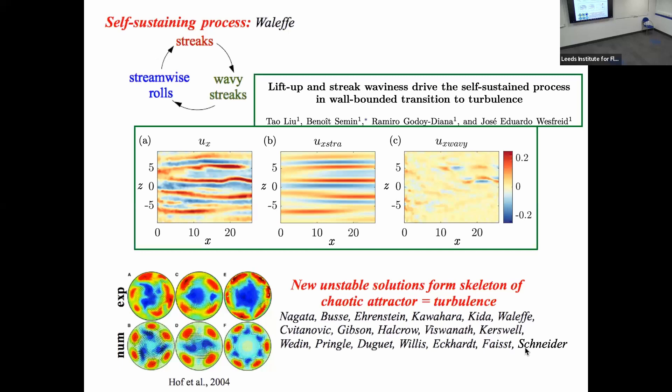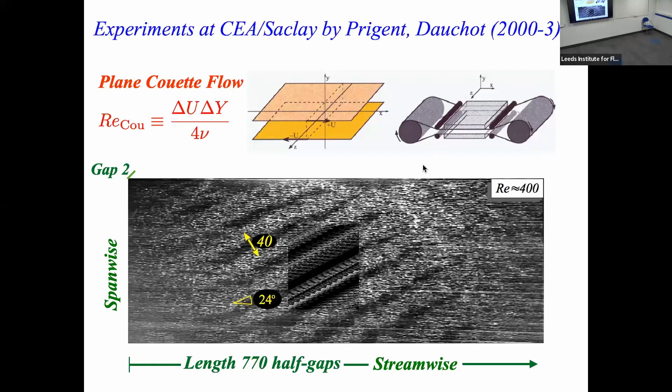Another commonly studied idea now is that turbulence, from a dynamical systems point of view, is a chaotic attractor with unstable steady states and periodic orbits embedded within it. The fluid trajectory in phase space bounces around between these unstable objects, and people compute these unstable objects — of which you need many to get statistics. But I'm only going to tell you about one specific thing: these bands.